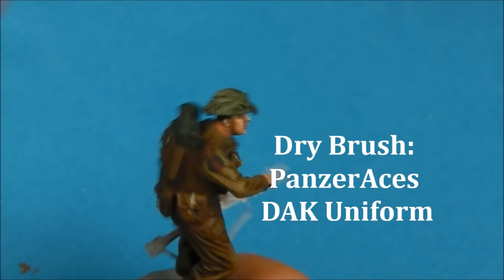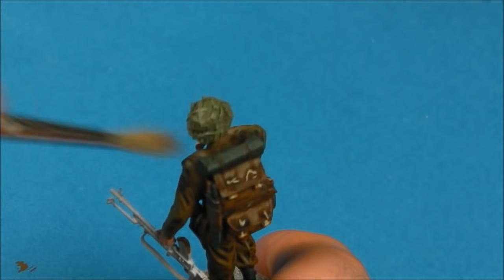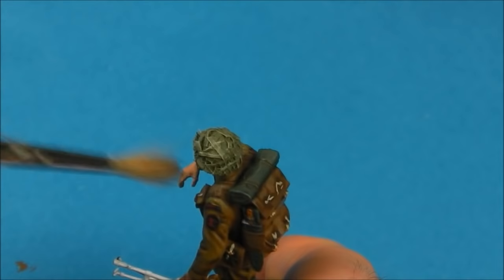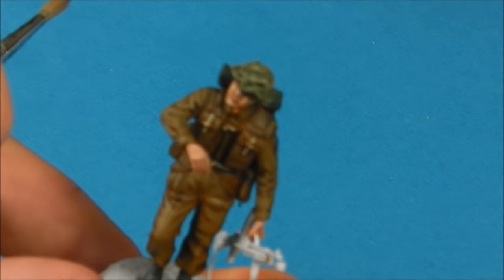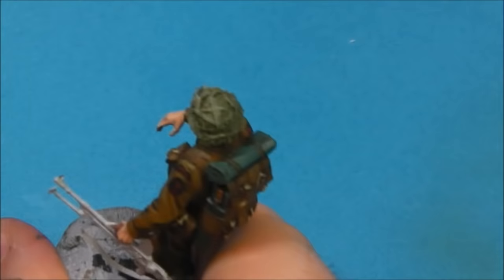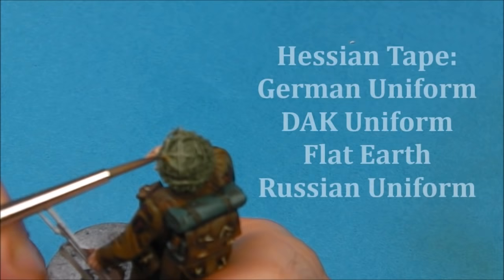We're going to take some of our Panzer Aces Dark Uniform and we're going to do a dry brush. I've just removed about 90% of the paint on a piece of towel, a piece of paper cloth, and I'm just going to dry brush this color onto the helmet. I just want to catch the camo netting and draw that detail out.